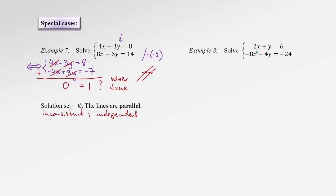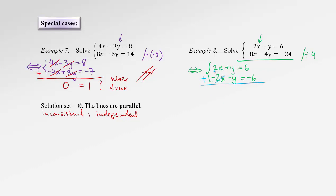Let's try another case. This time let's eliminate x. We could multiply the first equation by 4 to obtain the opposite of negative 8, or divide the second equation by 4. I prefer division to keep coefficients as low as possible. The equivalent system: copy the first equation as 2x plus y equals 6, and the second equation becomes negative 2x minus y equals negative 6. Now after adding side by side, the x's are eliminated, but also the y's are eliminated. So again the left-hand side is 0.